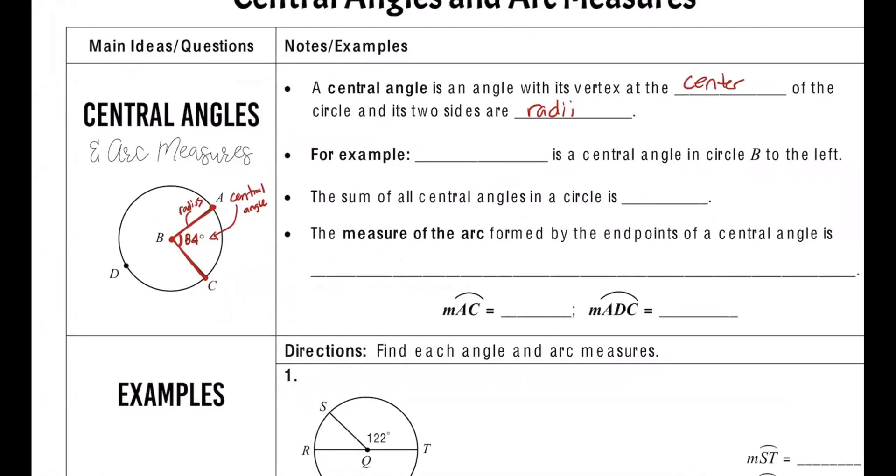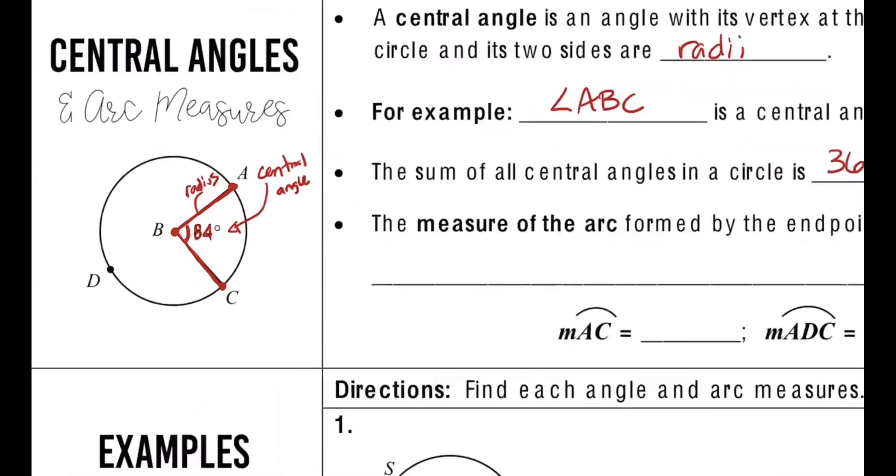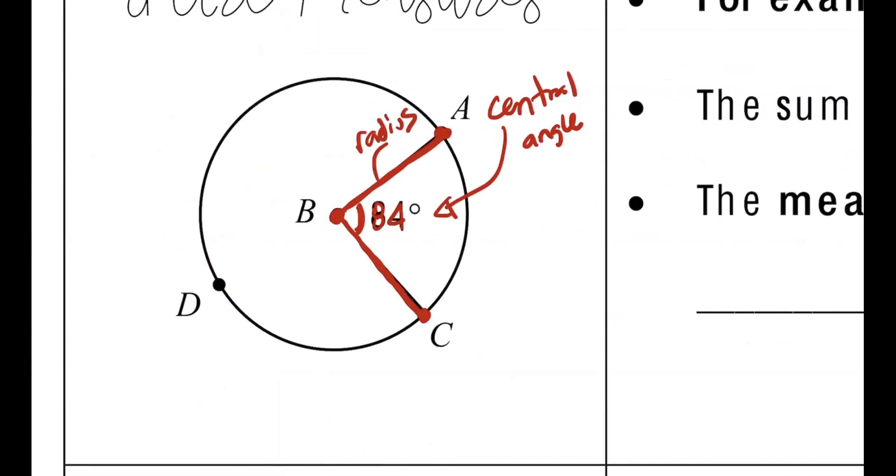Two radii form the sides of the angle. So for example, angle ABC in the picture is a central angle in circle B. The sum of all central angles in a circle is 360 degrees. It's a full rotation, right? Now, that's the central angle. The central angle is tied to the arc it creates. So if we look here, this angle creates an arc.